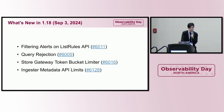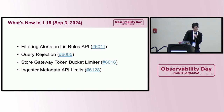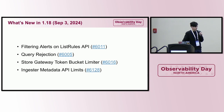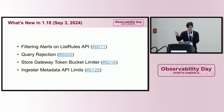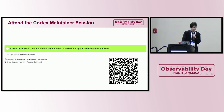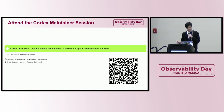In 1.18, we allowed for filtering alerts in the API, query rejection, store gateway token bucket limiter, and ingestor metadata API limits. There's a lot of detail I'm glossing over because we're on a tight schedule. I have a Cortex maintainer session on Thursday with my co-maintainer Daniel, so feel free to come by and learn more.